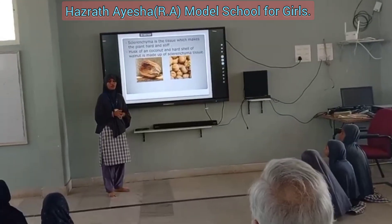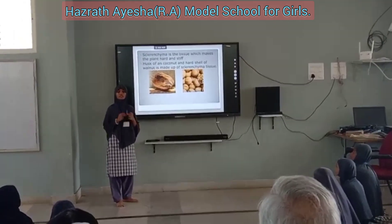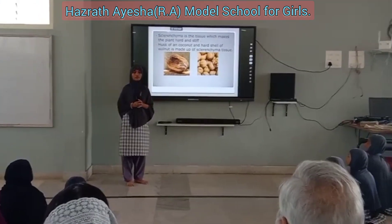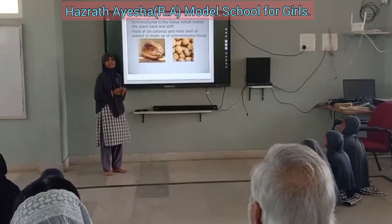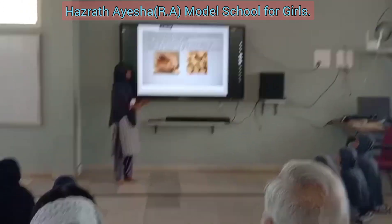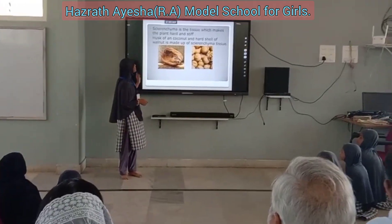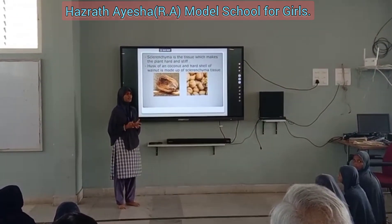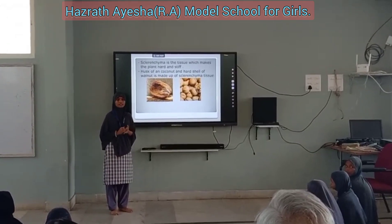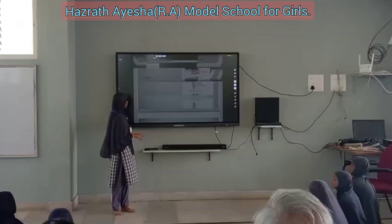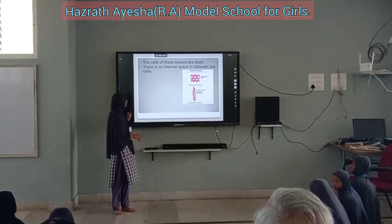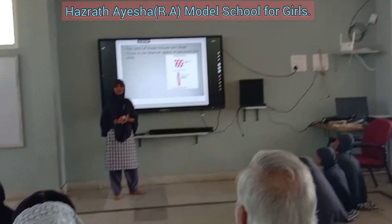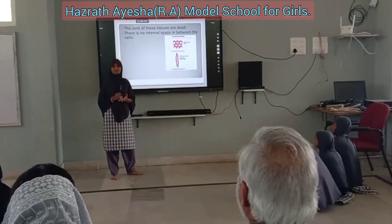Do you know which tissue is responsible for the hard and stiff covering of a plant? The sclerenchyma type of cells are mostly dead. As you can see in the picture, there are more thickened walls in large pieces compared to other pieces of tissue.